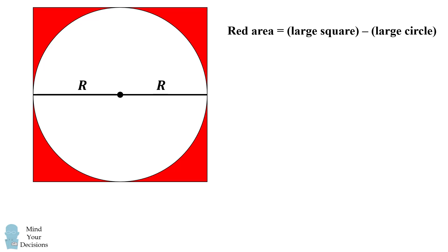The red area equals the area of the large square minus the area of the large circle. The large square has a side of 2r, and therefore its area is its side length squared, which is the quantity 2r squared.